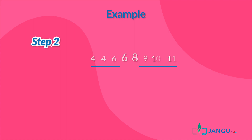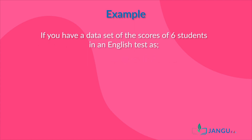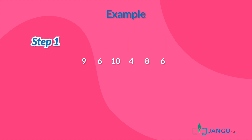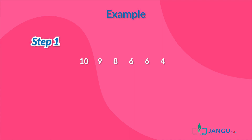For example, if you have a data set of the scores of six students in an English test as nine, six, ten, four, eight, and six, to calculate the median you should: one, arrange the scores in either ascending or descending order. Let's choose descending order for this example, which would have us arrange the numbers from biggest to smallest like this: ten, nine, eight, six, six, and four. Then we would look at the arranged data set and pick the elements in the middle.